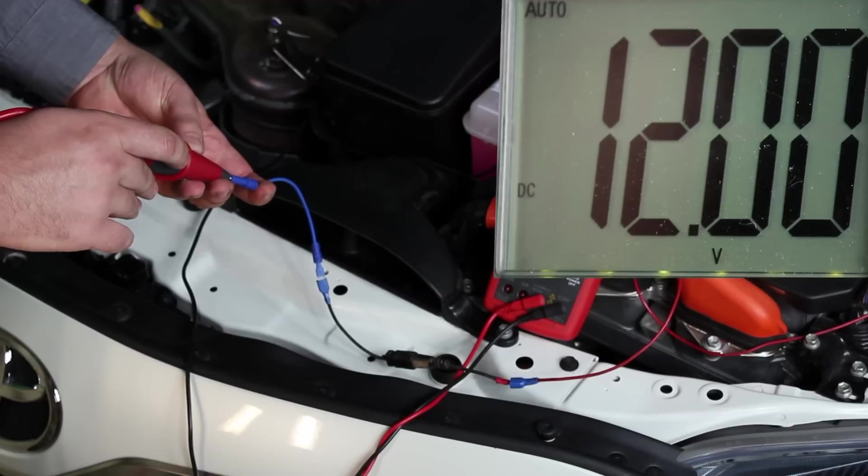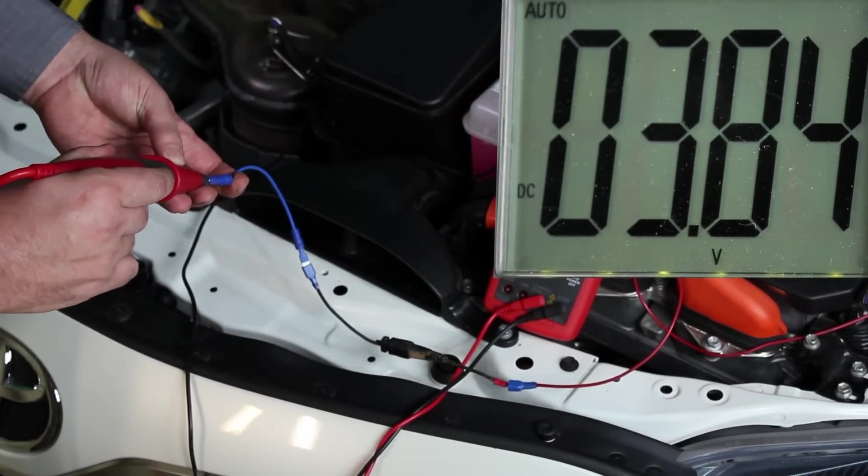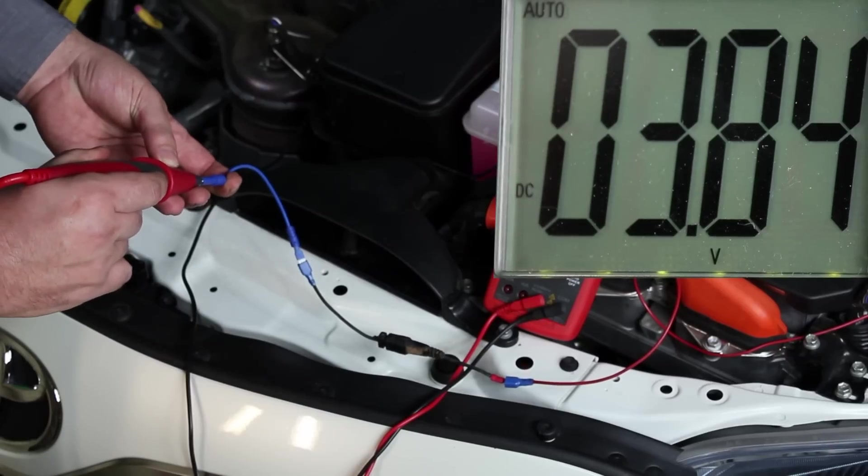We're eliminating the ground part of the circuit from the test. So, as you can see, I'm reading system voltage. Now, let's do a load test again. It drops again down to 3.85 volts.